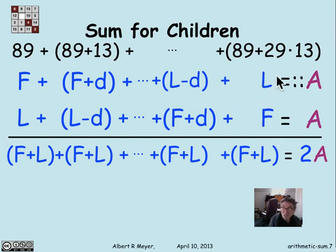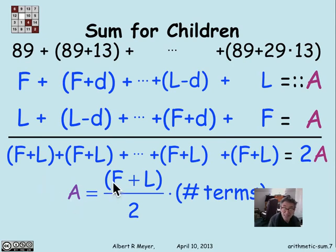Every one of these pairwise subsums comes out to be f plus l. And now we have a nice simple formula that a is equal to the sum of the first term plus the last term divided by 2 times the number of terms.